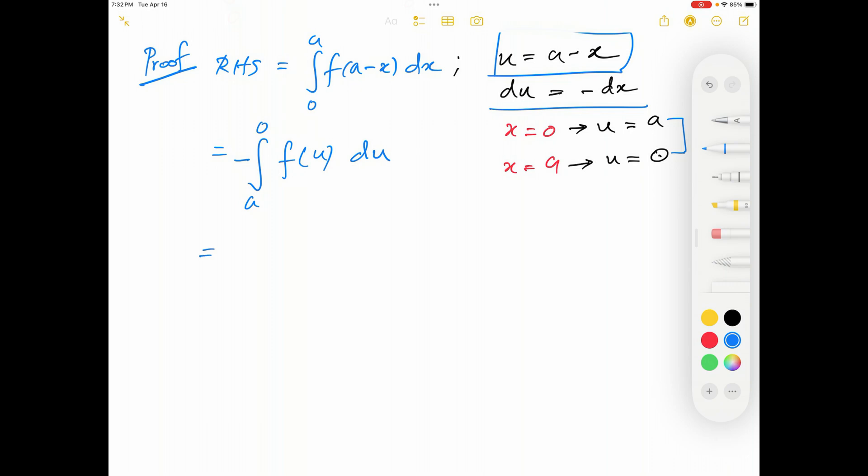Now you know that I can get rid of that negative symbol by flipping those upper and lower limits of the given integral. Negative integral a to 0 f of u du should also be equal to positive 0 to a f of u du.